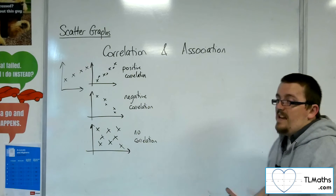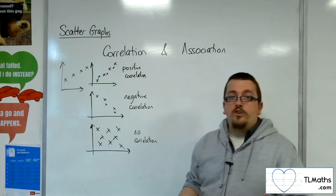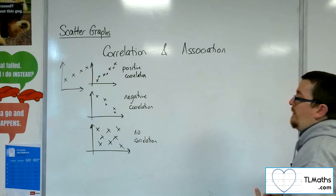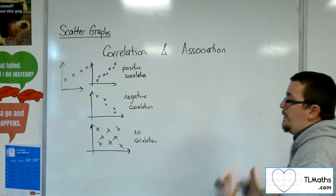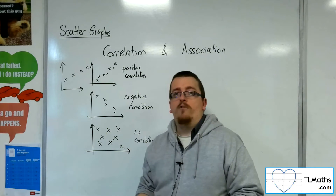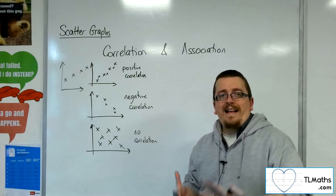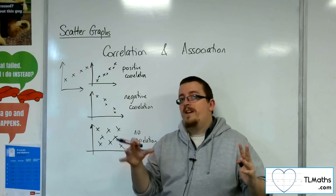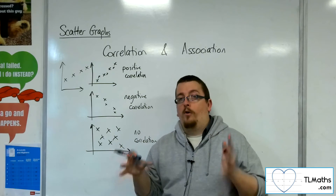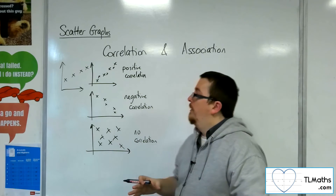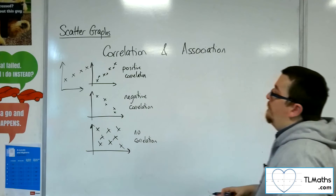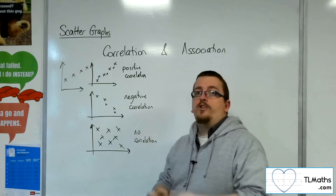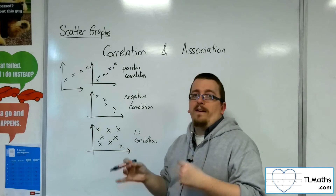So there are different levels of correlation, but everything to do with correlation — when we talk about correlation — has to do with whether it fits a straight line model or not. So the better the correlation, the closer it is to a straight line.